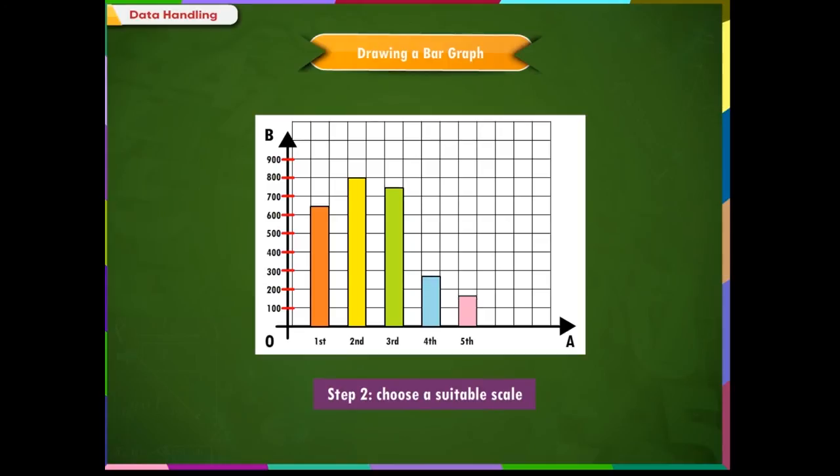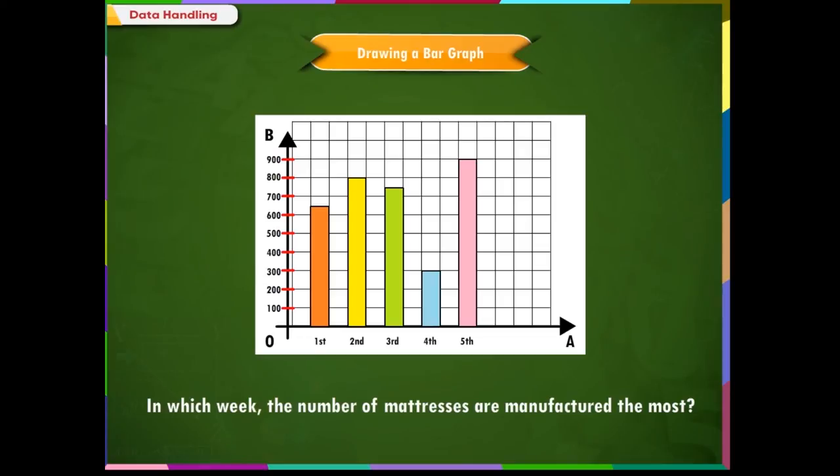Plotting in the similar manner, we get the complete bar graph. In which week, the number of mattresses are manufactured the most? It is clear from the graph that in the fifth week, the number of manufacturing the mattresses were the most.